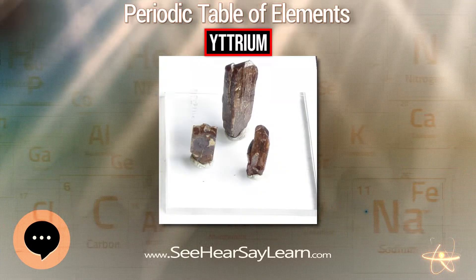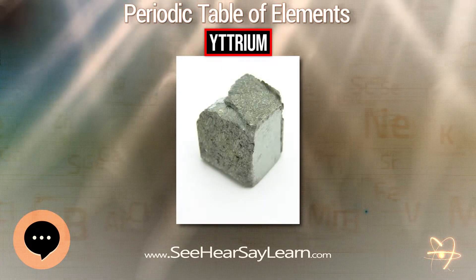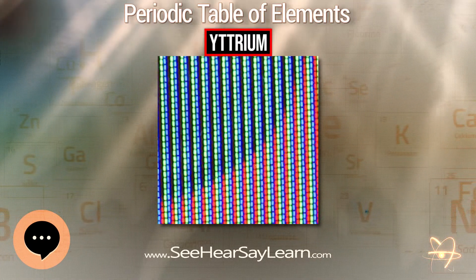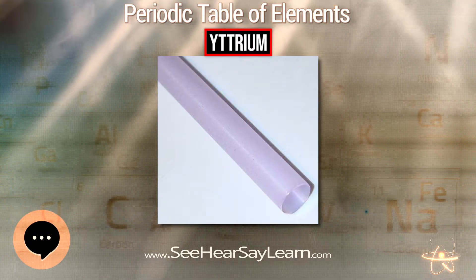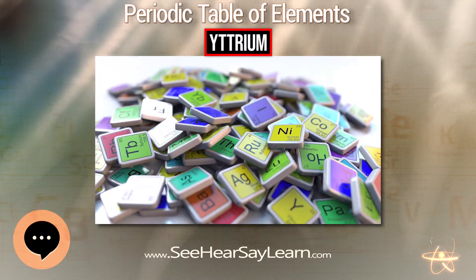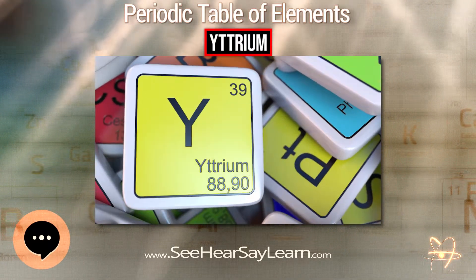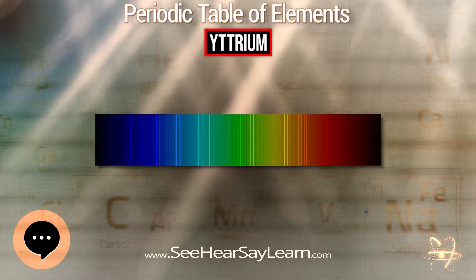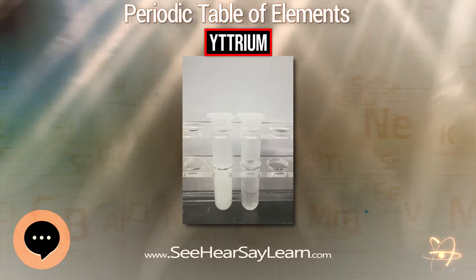Yttrium nitride is formed when the metal is heated to 1000°C in nitrogen. The similarities of yttrium to the lanthanides are so strong that the element has historically been grouped with them as a rare earth element and is always found in nature together with them in rare earth minerals. Chemically, yttrium resembles those elements more closely than its neighbor in the periodic table, scandium, and if physical properties were plotted against atomic number it would have an apparent number of 64.5 to 67.5, placing it between the lanthanides gadolinium and erbium.